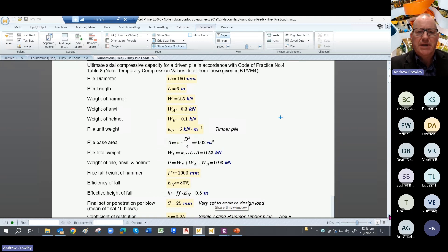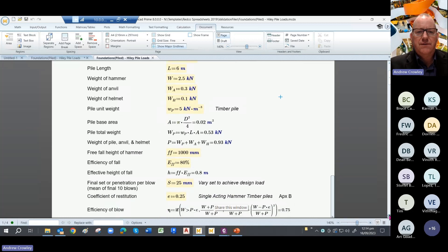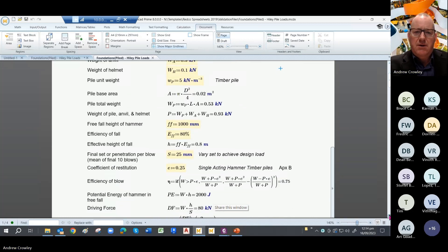So the input is basically your pile diameter, your pile length, the weight of the hammer, and you can have an estimate for the weight of the anvil and the helmet and so on. You can derive the pile unit weight usually from timber tables, and then the actual weight of the pile itself based on its length and its area.